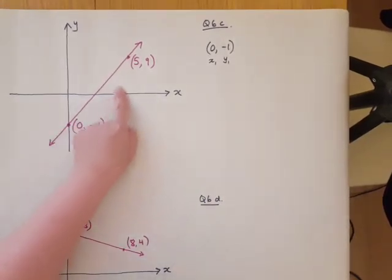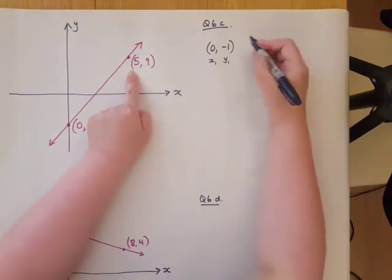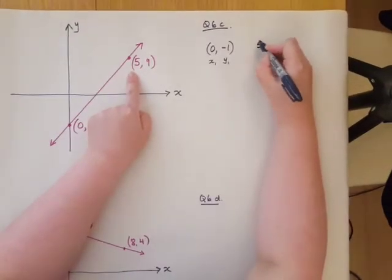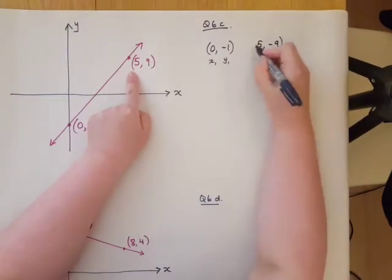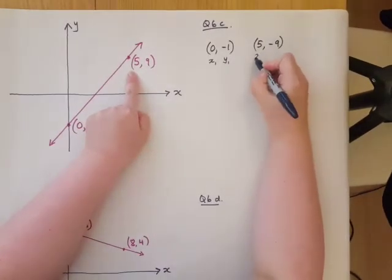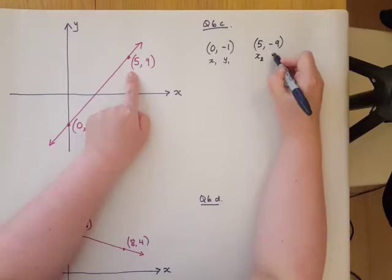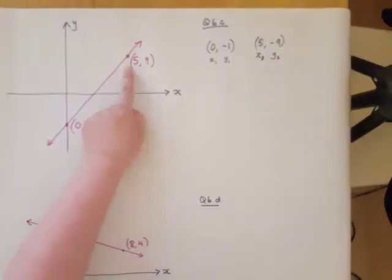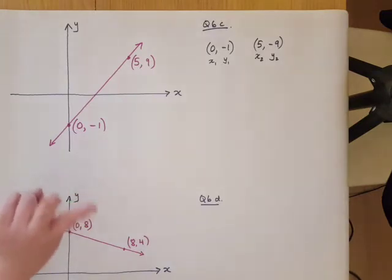Then here's the second point. I'm going to copy that out and I'm going to label it x2 and y2. The little 2 means this point is the second point.